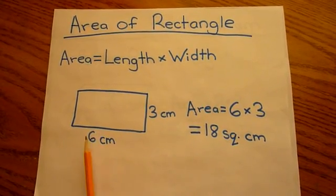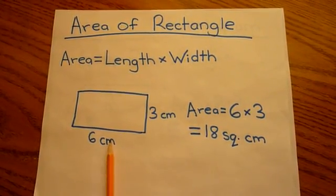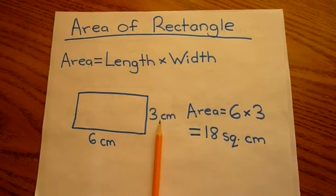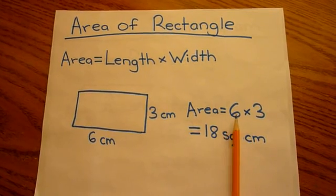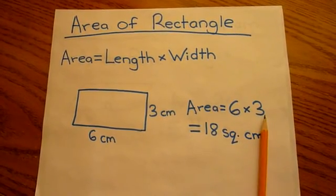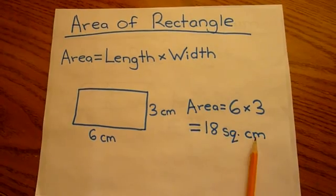So in this example, the length is 6 centimeters and the width is 3 centimeters. So the area would be 6 centimeters times 3 centimeters, and that would equal 18 square centimeters.